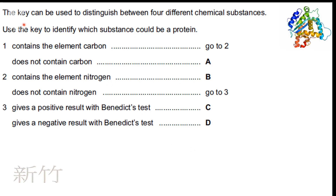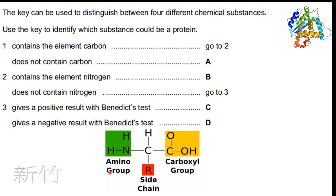The next question is a little different. Here you can see that the key can be used to distinguish between four different chemical substances. Use the key to identify which substance could be a protein. You should know a basic idea about protein structure — protein is made up of amino acid molecules. An amino acid molecule should contain a carboxyl group, an amino group, a hydrogen group, and an R-group.